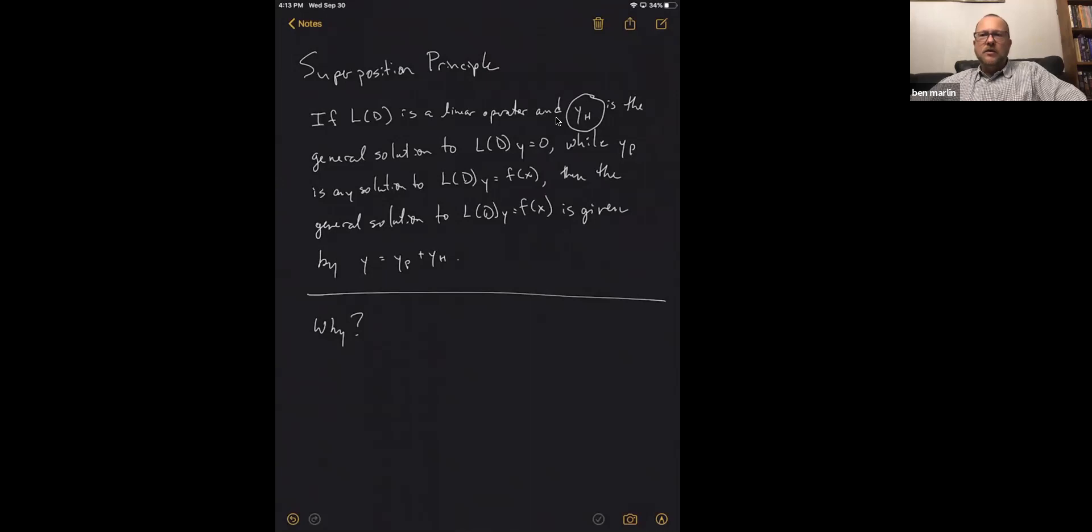Because when you take that D squared plus one and multiply it by y, as you distribute through, you'll get D squared y, and that's y double prime, plus one y, and that's going to be just the plus y.